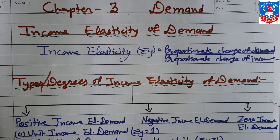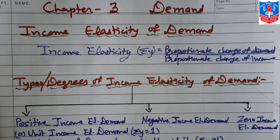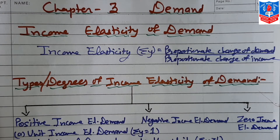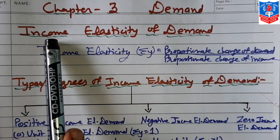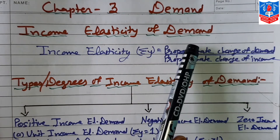Good morning students, welcome to the sixth session of the third chapter, that is demand. In today's session we will cover income elasticity and cross elasticity, which come after price elasticity. Let us start with the first — income elasticity of demand.